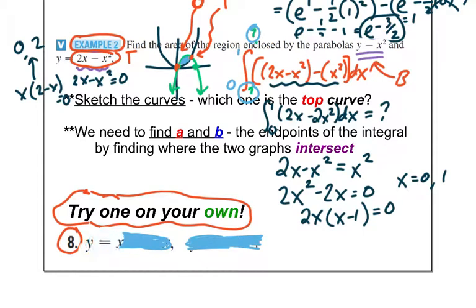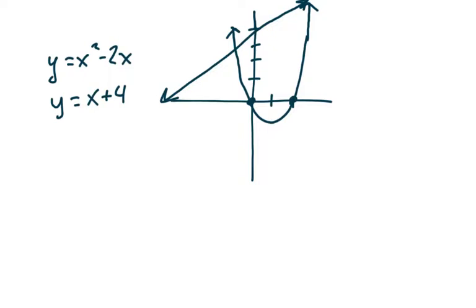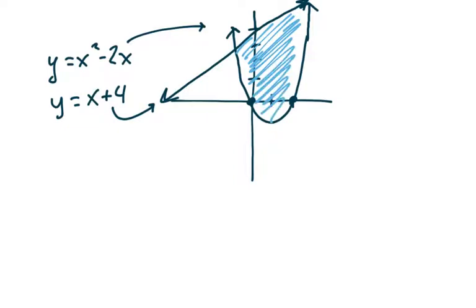Want to try one more? Example 3: x squared minus 2x and x plus 4. Pause the video and try it on your own — graph it using your basic knowledge of these shapes, try to find the top and the bottom, and if you don't know where they cross, set them equal to each other to find the limits. I have my x plus 4 line here — positive slope of 1, y-intercept of 4 — and here's my upward parabola with intercepts at 0 and 2. The shaded area is between the two curves, with the line on top and the parabola on the bottom.